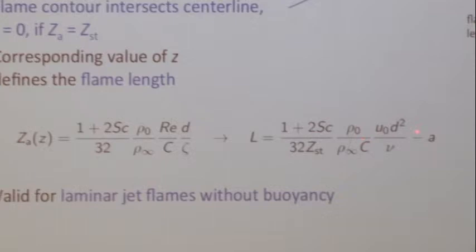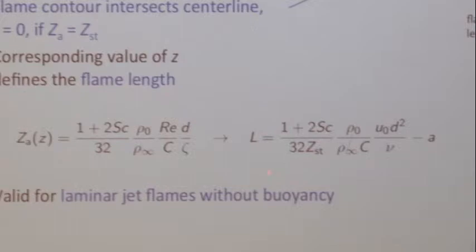Setting the centerline mixture fraction equal to stoichiometric gives the flame length L. The final result shows L divided by D is proportional to the Reynolds number — the larger the Reynolds number, the longer the flame. And it's linear: if you double the speed, you double the flame length. This is exactly what we saw in the demonstration.